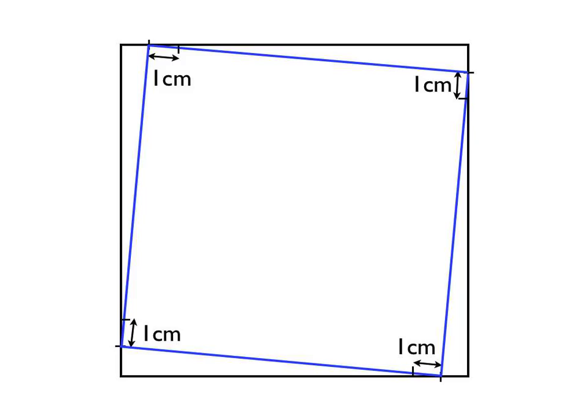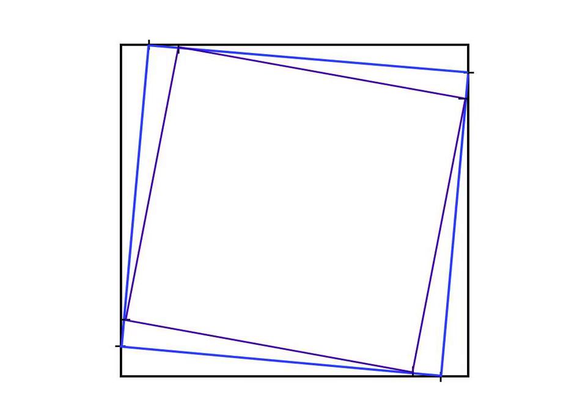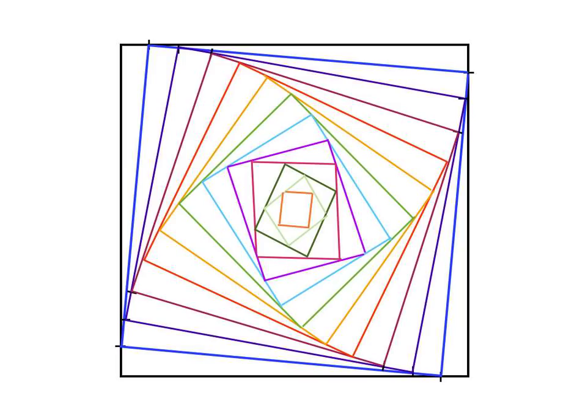Make yourself some little marks that are all one centimetre from each corner. Then we just link those points together with a straight line and we get another square, as you can see here. Then repeat the process over again — on this third square, measure one centimetre from each corner, and then link those points together to form another square. You just repeat this process over and over again until you get your curve of pursuit.